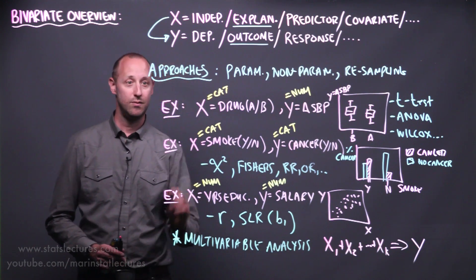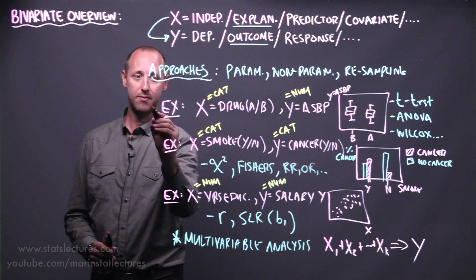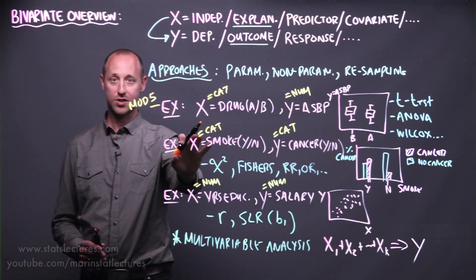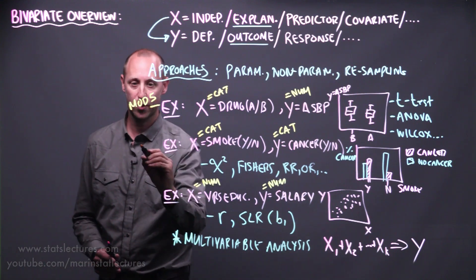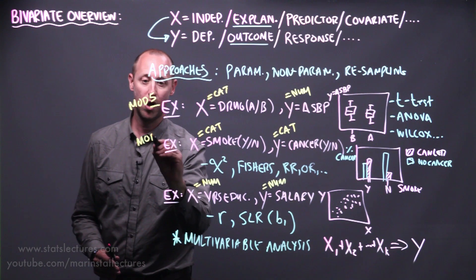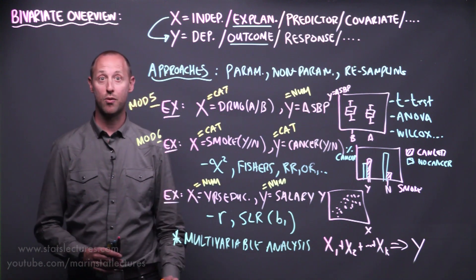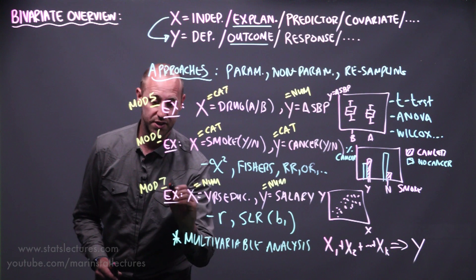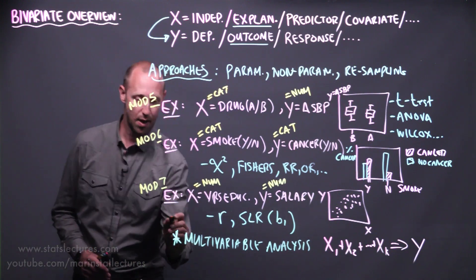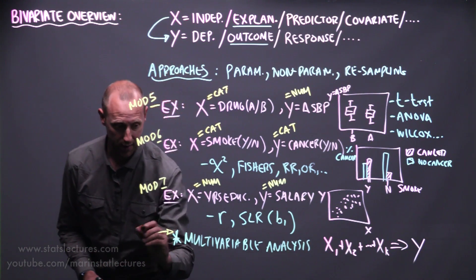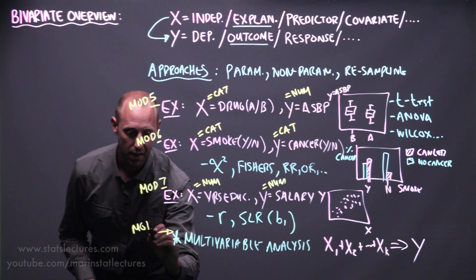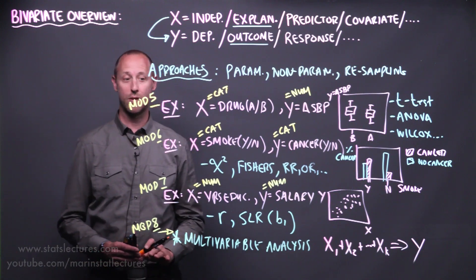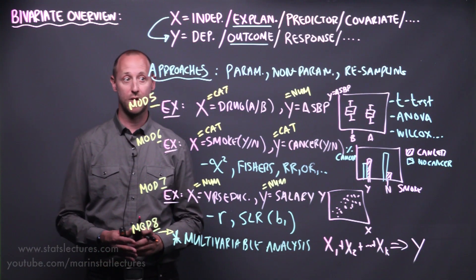In our particular course, we're going to start to talk about these types of data in module number five. We're going to talk about relationship between two categorical variables in module number six. We're going to talk about relationship between two numeric variables in module number seven. And we're going to start to lay a foundation for multiple variable analysis in module eight. And we're going to continue on this discussion in our second course where we cover all types of multivariable methods.